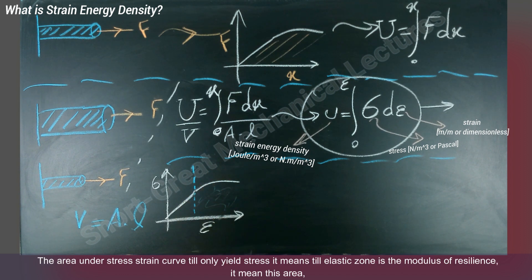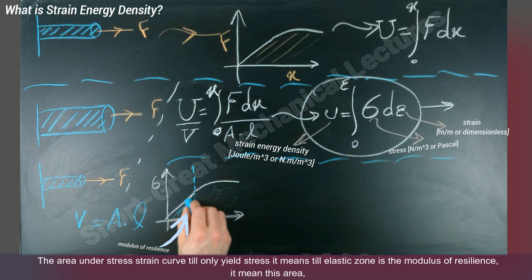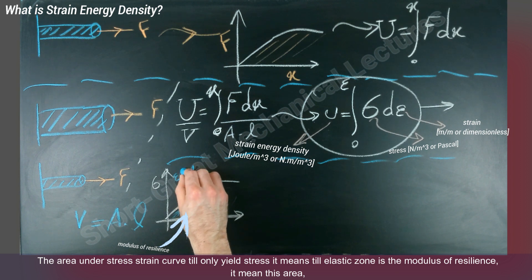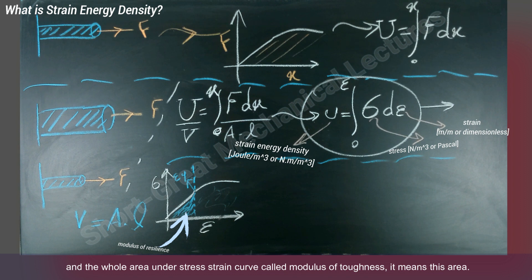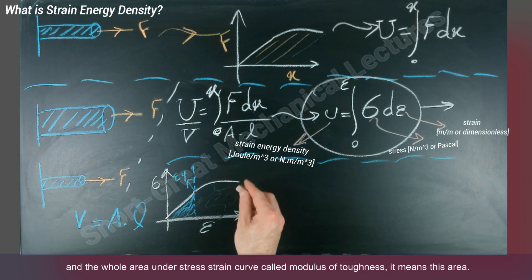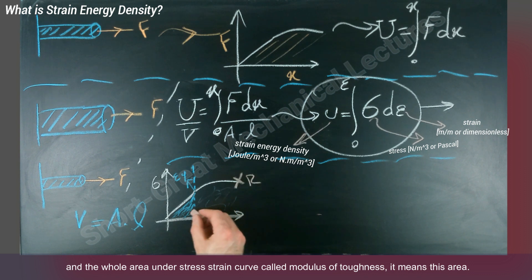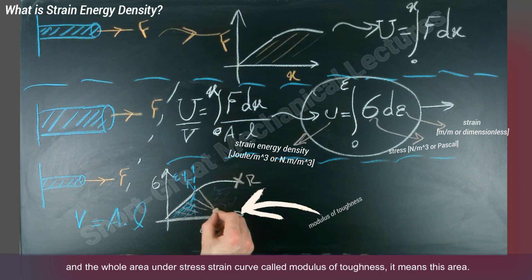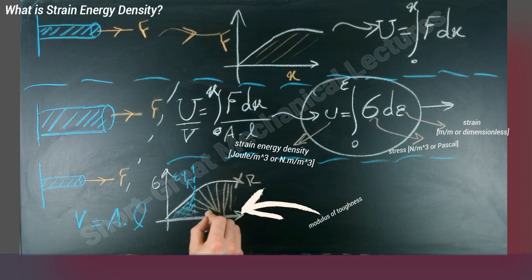The area under the stress-strain curve till only yield stress—it means till the elastic zone—is the modulus of resilience. It means this area. And the whole area under the stress-strain curve is called modulus of toughness. It means this area.